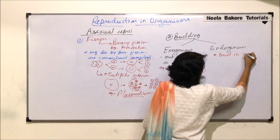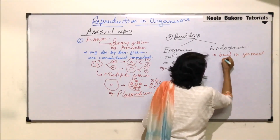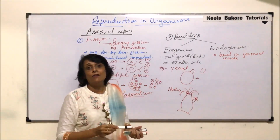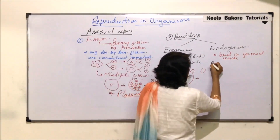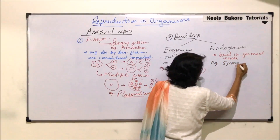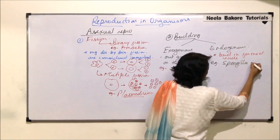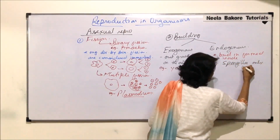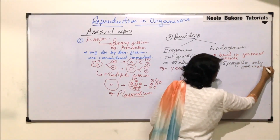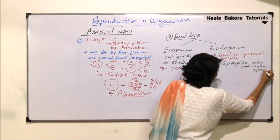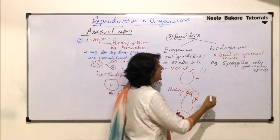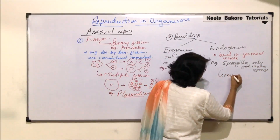Endogenous budding means the bud grows inside the body. This is seen in spongilla, the only freshwater sponge. The endogenous buds produced are called gemmules.